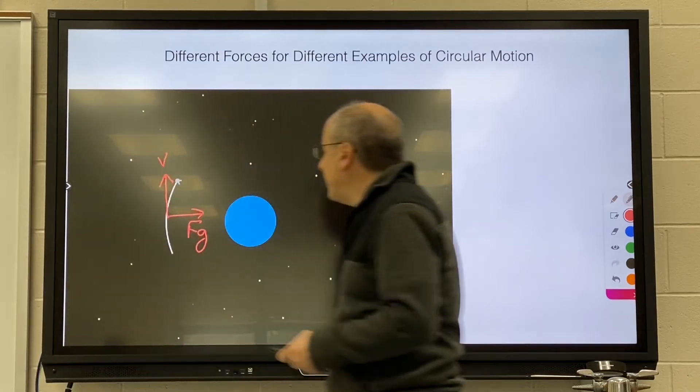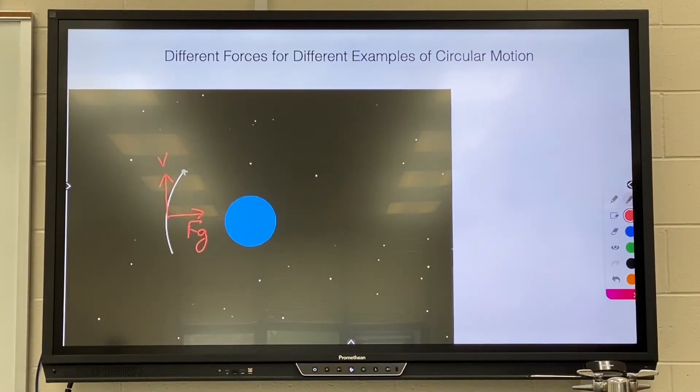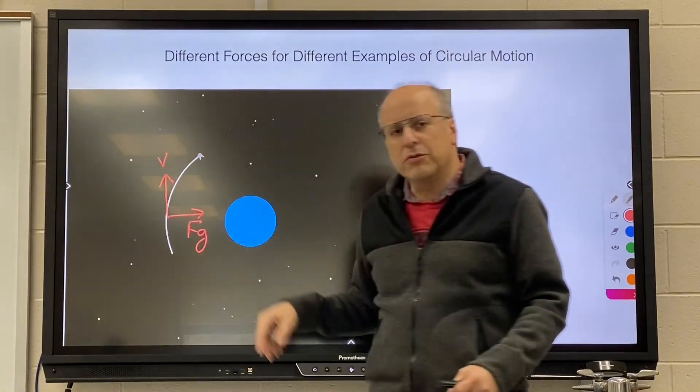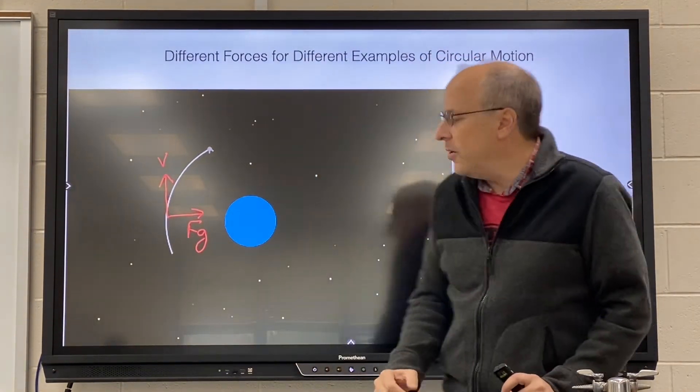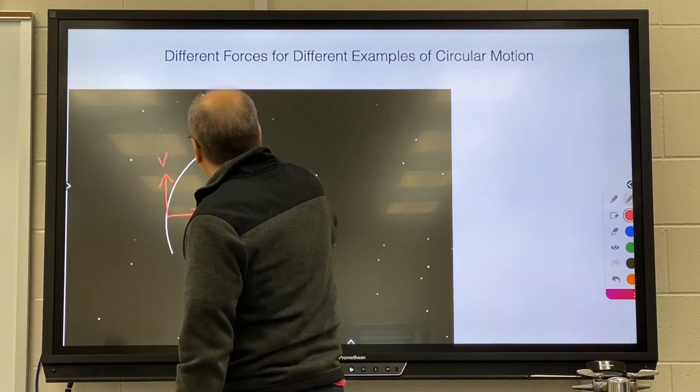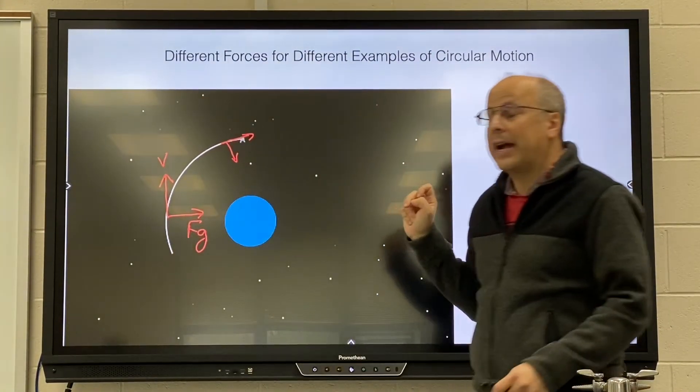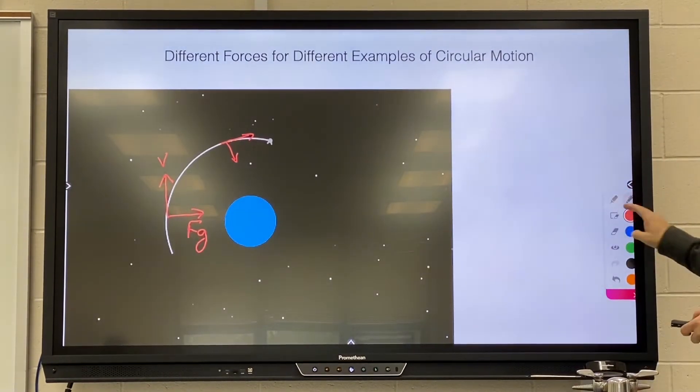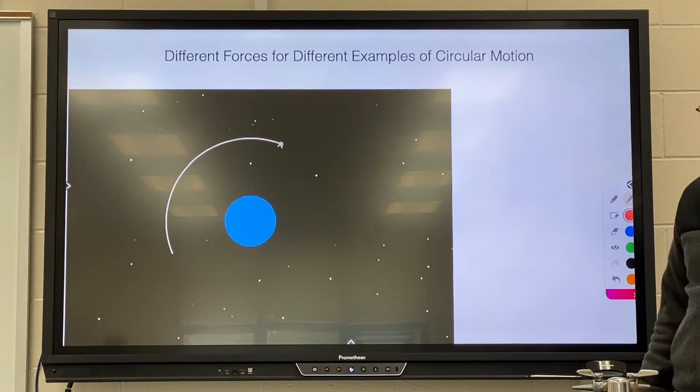Our natural motion is going to be perpendicular to that. If we did not have that original motion, we'd just be pulled right into the planet. But we have our original speed, and gravity serves to change the direction of that speed. So for planets, satellites, and moons, it's force gravity.